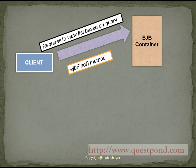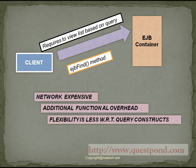In some cases, it just returns the references via the primary keys, and in certain cases it can also return references to the entity beans using which the client can invoke a call. The above design approach has the following disadvantages: it is network expensive since the client has to invoke methods on remote objects to get the required result. There are additional function overheads involved, especially in getting the object references and then using them to get the required values. The EJB find method query constructs are also very less flexible as compared to other query constructs like Hibernate query language and so on.